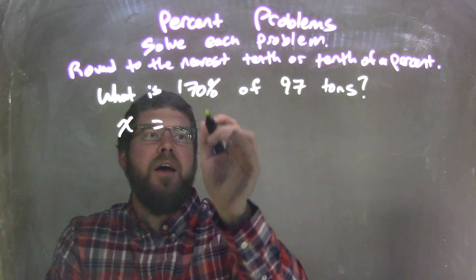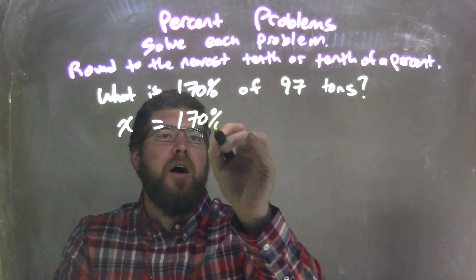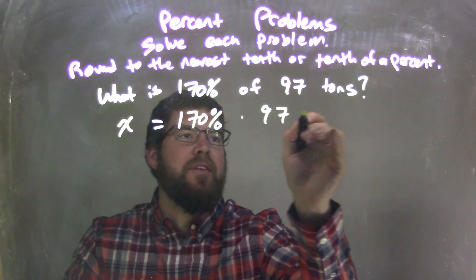Well first let's make this into an equation. What? X is equal sign, 170% right here, of multiplication, 97 tons.